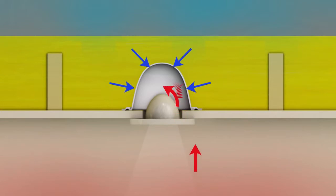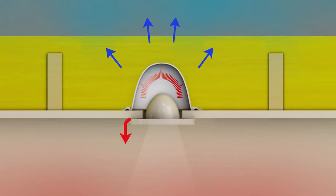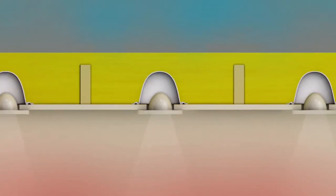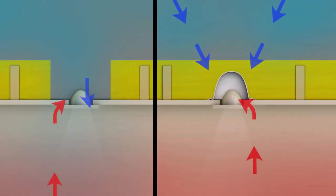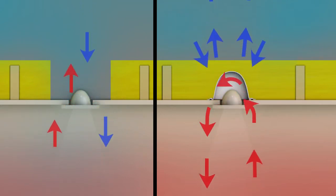Thermahood downlight covers provide an airtight seal which dramatically reduces air leakage and heat loss. Thermahood also allows for continuous insulation over and around the light. This drastically improves the insulation effectiveness and meets building regulations.